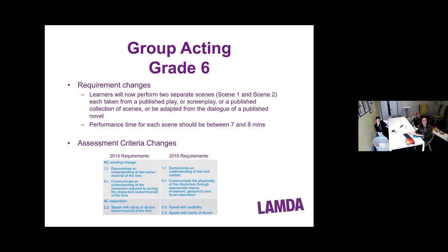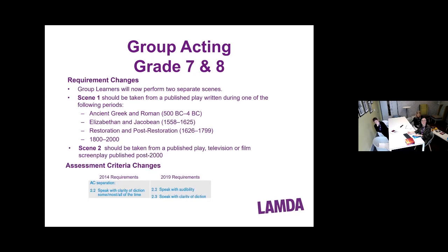For Group Acting Grade 6, learners will now perform two separate scenes — listed as C1 and C2 — each taken from a published play, screenplay, or published collection of scenes. They can also be adapted from the dialogue of a published novel, which gives more scope and creativity than solo/duo acting exams. The performance time for each scene has been amended. For Grades 7 and 8, periods have been brought in mirroring solo/duo acting — two scenes: one pre-2000 and one post-2000. There's also the separation of audibility and clarity of diction.